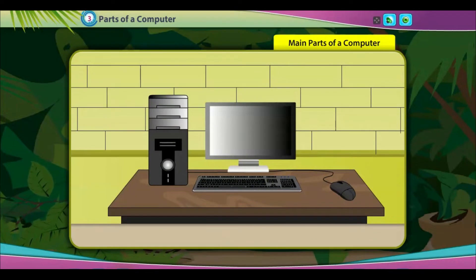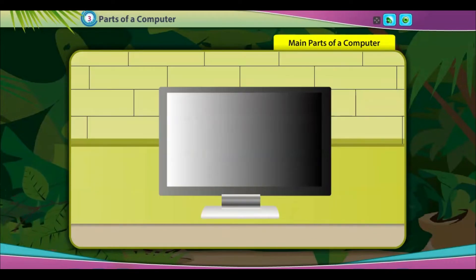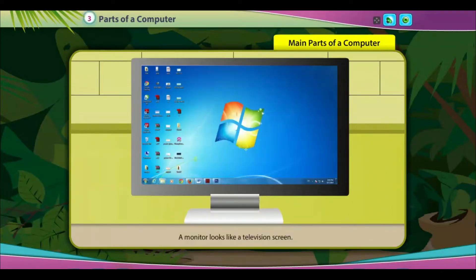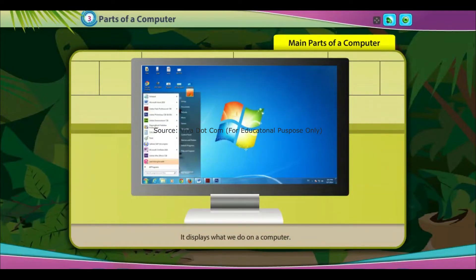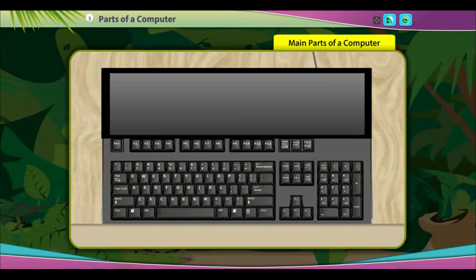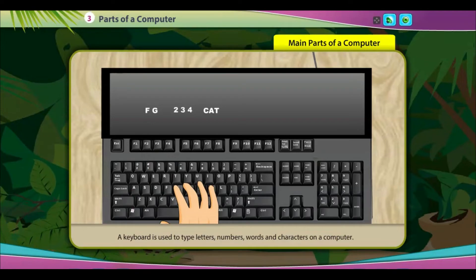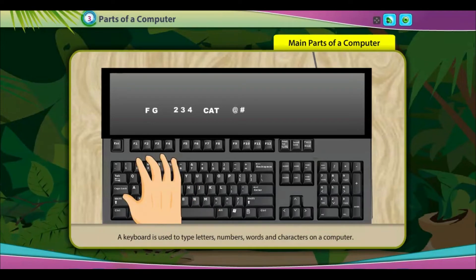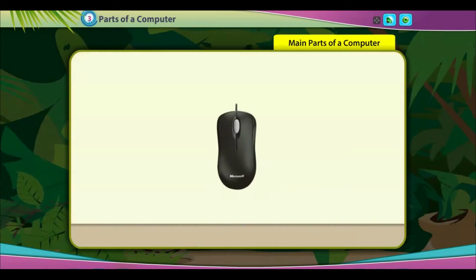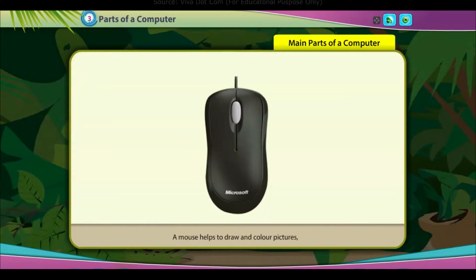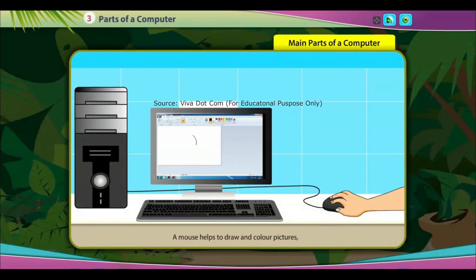Main parts of a computer. Monitor: a monitor looks like a television screen; it displays what we do on a computer. Keyboard: a keyboard is used to type letters, numbers, words, and characters on a computer.